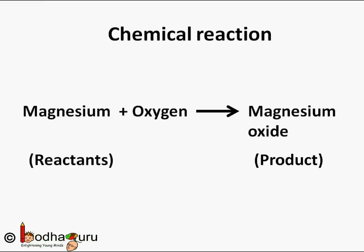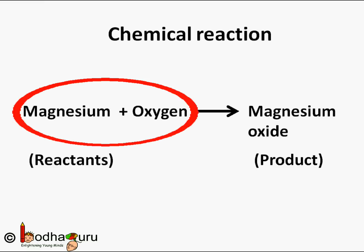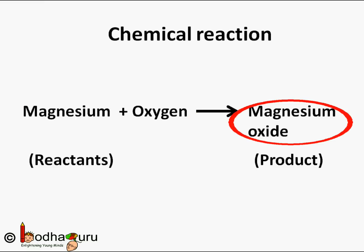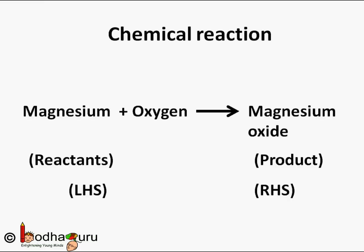The substances that take part in the chemical reaction and undergo change are called reactants. So, here, magnesium and oxygen are reactants. The new substance formed is the product of the reaction. So, here, magnesium oxide is the product. A chemical reaction shows the change of reactants to products through an arrow placed between them.